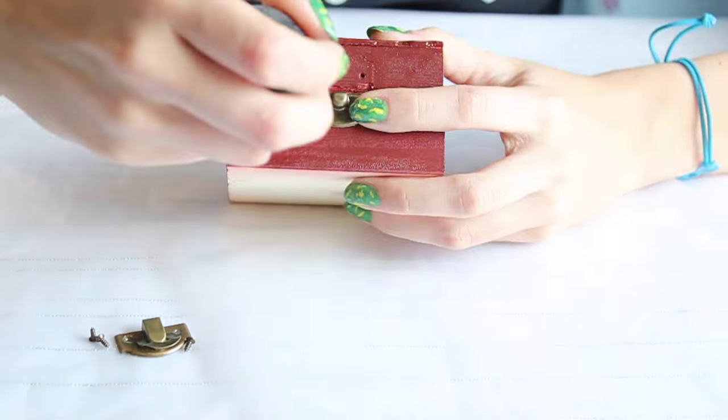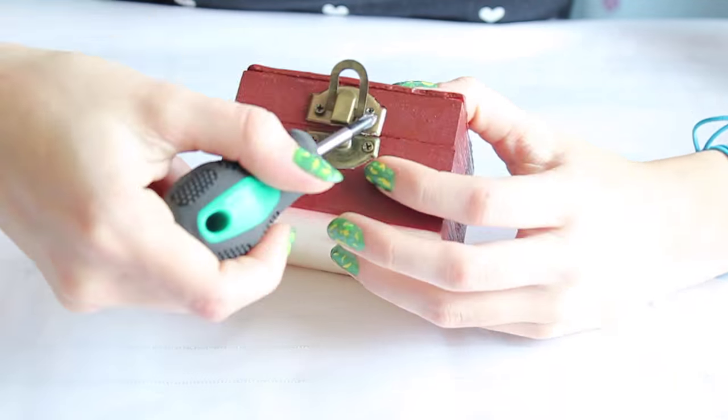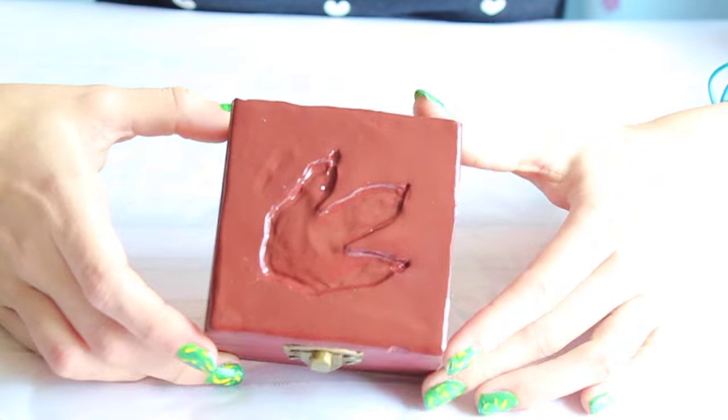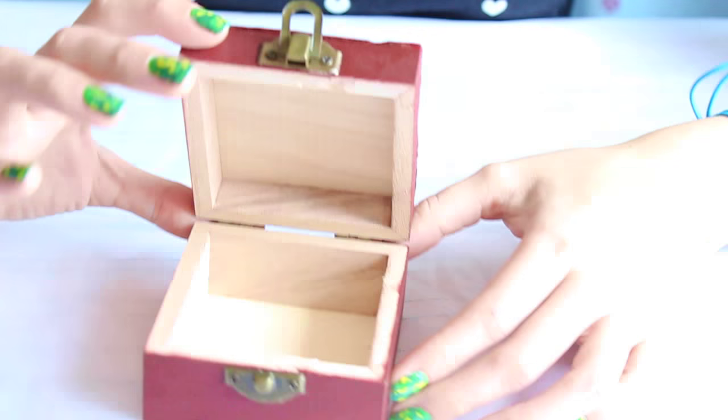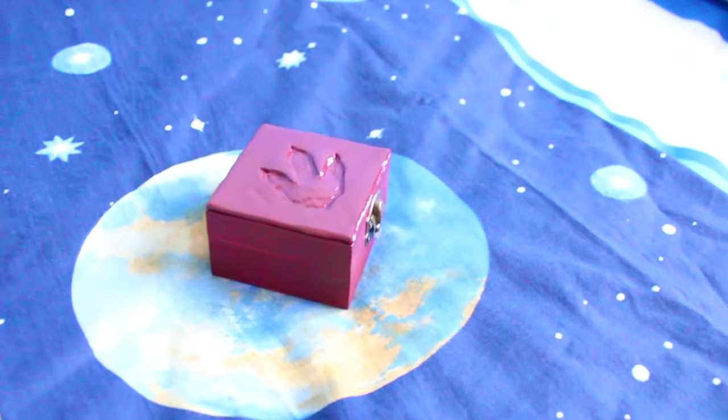Then just give it a couple of coats in the color you prefer, and when it's completely dry, you can reassemble the lock. And you're ready to use your awesome Dino Box!